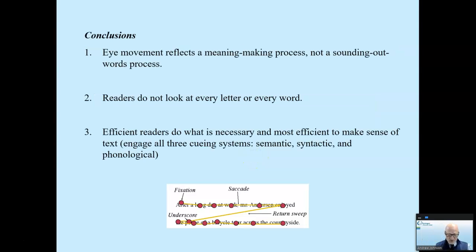First, eye movement reflects a meaning-making process, not a sounding-out word process. Eye movement shows that the brain is using the text to confirm the micro-predictions. They're saying, does this make sense? And the second thing, readers don't look at every letter or word. They use syntactic and semantic information, as well as information in the head to recognize words. And efficient readers do what's necessary and most efficient to make sense of text, to create meaning. And this means that they engage in all three cueing systems. They engage all three cueing systems to create meaning with print.